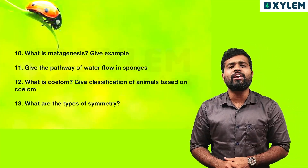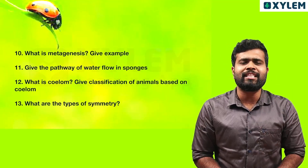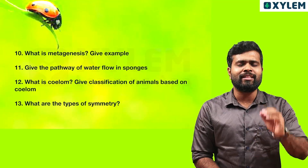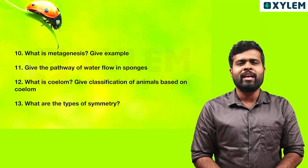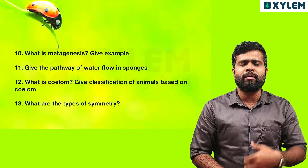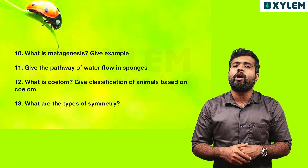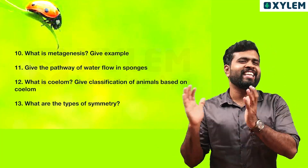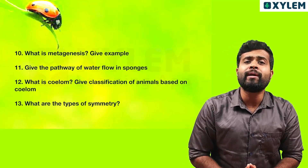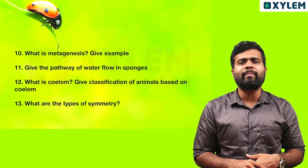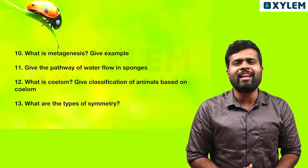Next question: what is metagenesis? Give an example. Metagenesis is the alternation of generations — alternating between sexual and asexual generations. An example of metagenesis, or alternation of generation, is Obelia. Obelia has two body forms and is the main example of metagenesis.